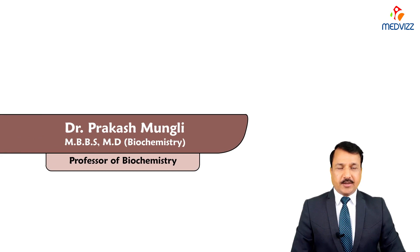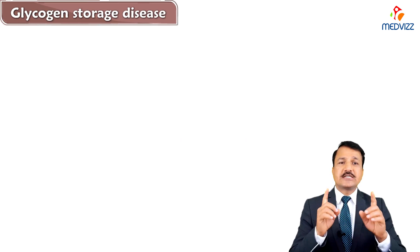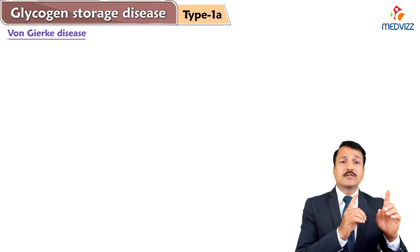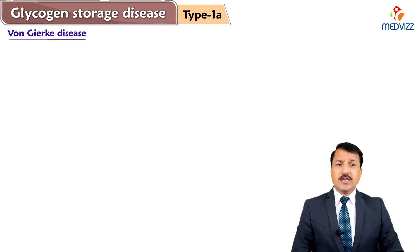Hey everyone, I am Dr. Prakash Mungali, Professor of Biochemistry. In this video, I am going to explain all about Glycogen Storage Disease Type 1. Specifically, Glycogen Storage Disease Type 1A, that is Von Gierke Disease. Let's get into all the details of Von Gierke Disease.